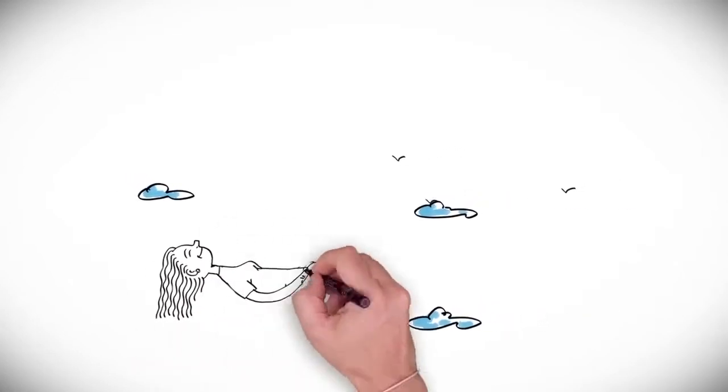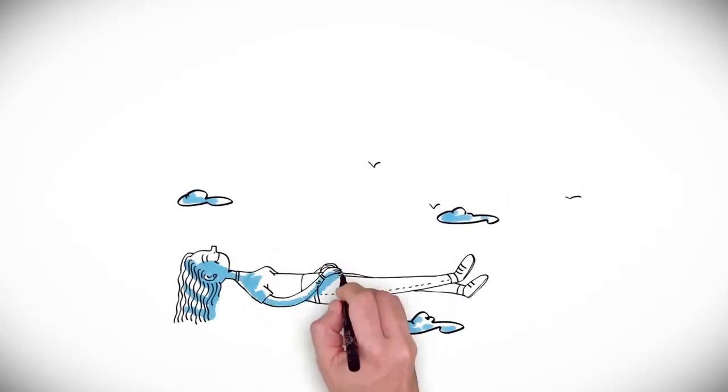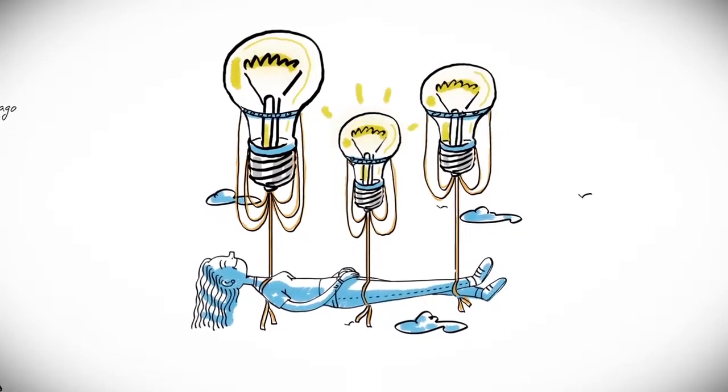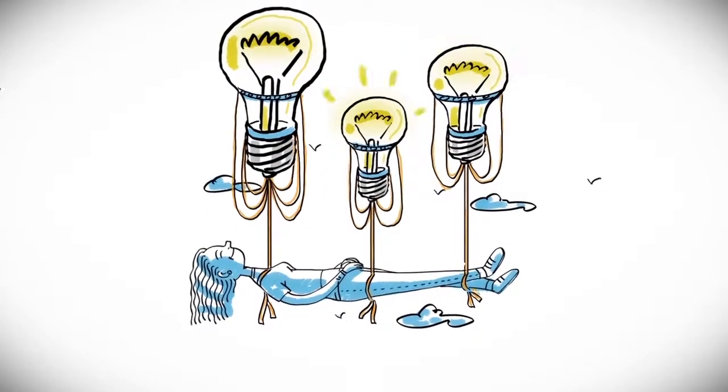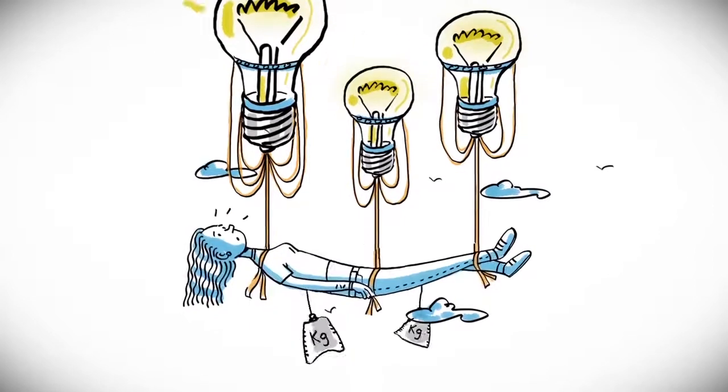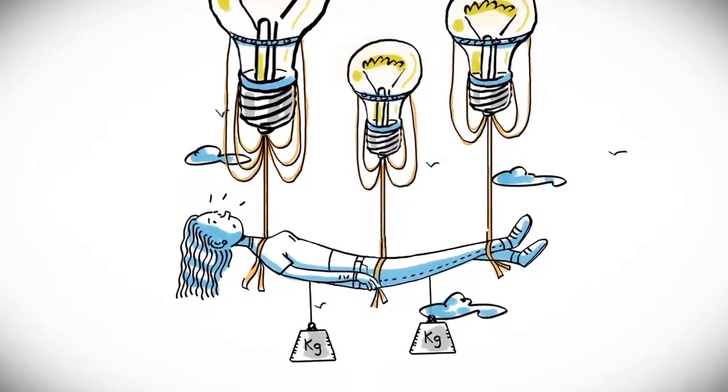This is Natalia. She's 24 years old, she's an industrial engineer and she dreams of turning the revolutionary design that she's just patented into a reality. A dream which at the moment seems impossible.